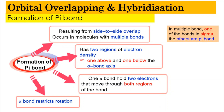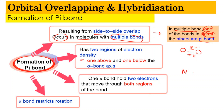Now we focus on the formation of the pi bond. Pi bond results from side-to-side overlap and occurs in molecules with multiple bonds. In a multiple bond, one of the bonds is always a sigma bond and the others are pi bonds. For example, a double bond has one sigma and one pi bond; a triple bond has one sigma and two pi bonds. The pi bond restricts rotation and movement between the two atoms.